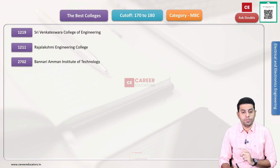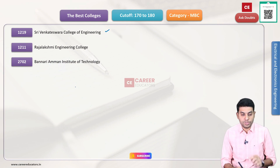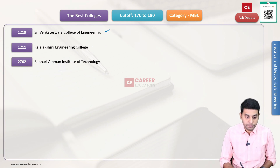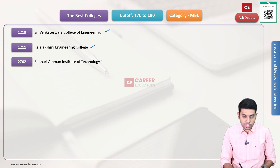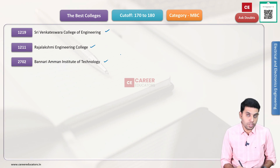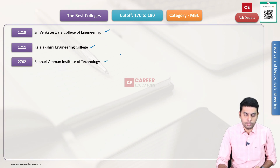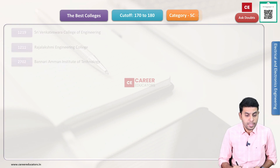Next category — we have MBC category. College codes: 12193 Venkateshwara College of Engineering, 1211 Rajalakshmi Engineering College, 2702 Bannari Amman Institute of Technology. These are the best colleges available depending on your rank in the MBC category.